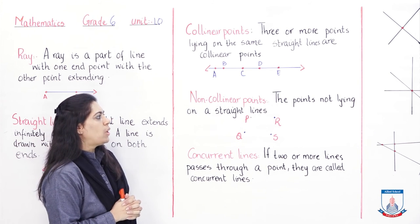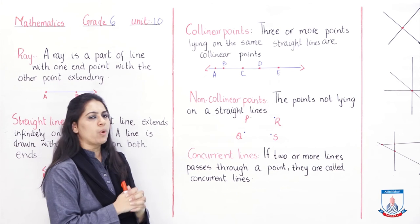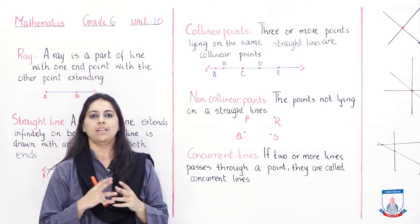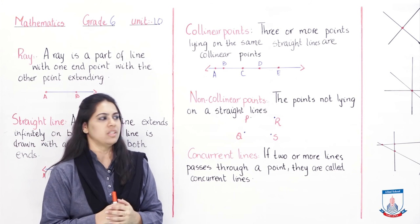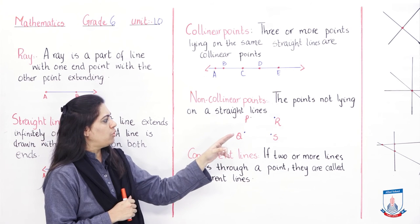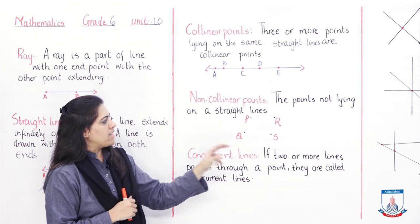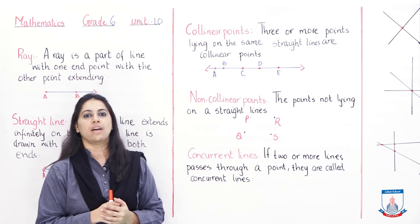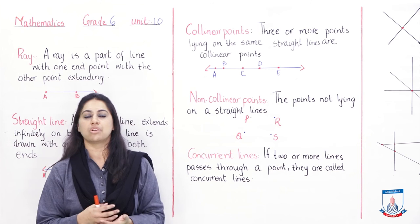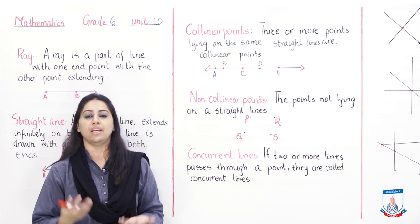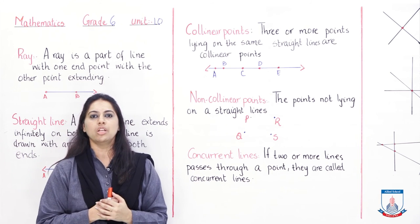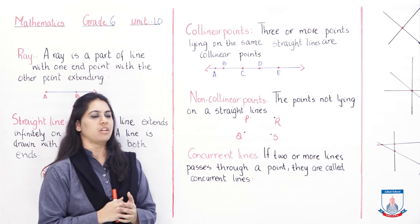Non-collinear points are points that are not on a straight line. As you can see, points P, Q, R, S are four points that are not on a straight line - so these points are called non-collinear points.